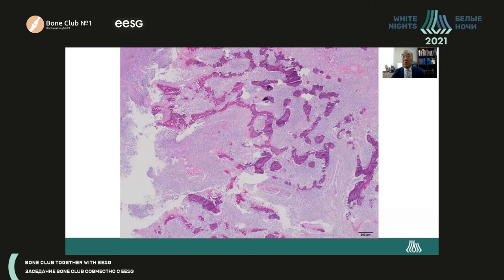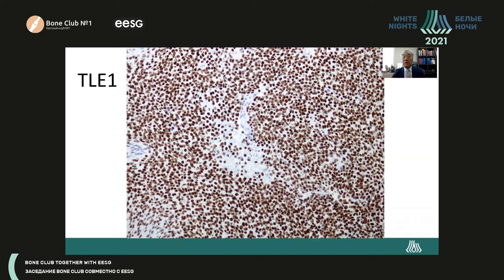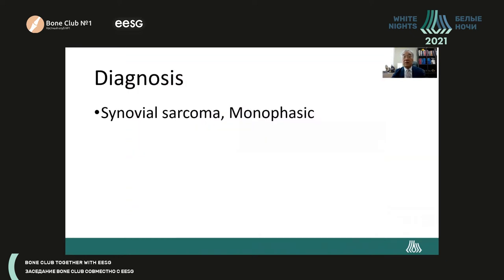On low-power view, you can see trabecular bones with diffusely infiltrative growth of tumor cells between the trabecular bones without any organoid pattern. The individual tumor cells show a fair amount of cytoplasm over vesicular nuclei, and nucleoli are not prominent. With TLE1 immunostaining showing intense nuclear staining, the final diagnosis for this first case is monophasic synovial sarcoma.